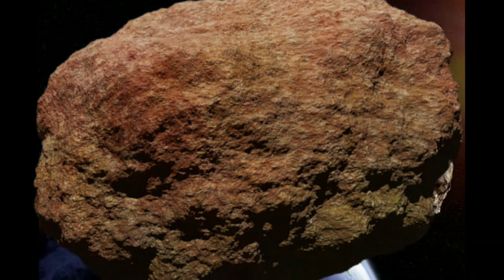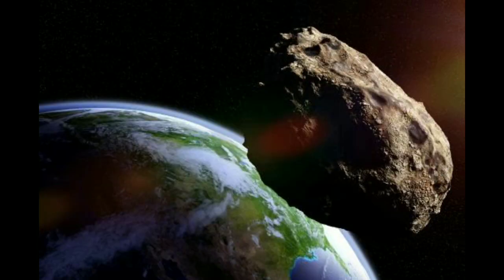NASA has its eye on asteroid 4660 Narius because it's well over 492 feet long and will come within 4.6 million miles of Earth. That puts it in the potentially hazardous category.